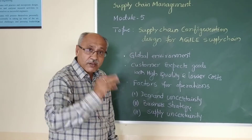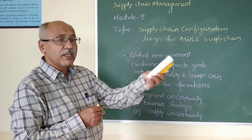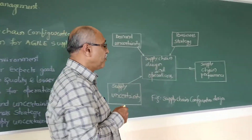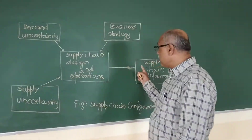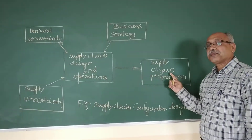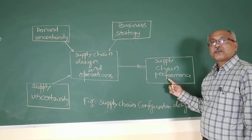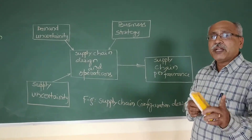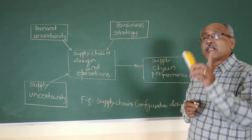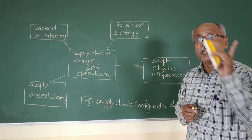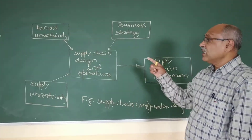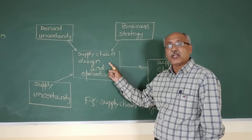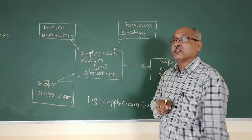Let us understand what is supply chain configuration design. Looking at this flow diagram — supply chain performance of any company mainly depends on how well it is able to deliver goods and satisfy customers. In turn, that depends on how well the supply chain is designed and how well operations are managed in the market.